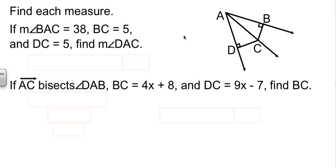So, let's find a couple of measures here. However, they tell us that angle BAC is 38, BC is 5, and CD is also 5. And our job is to find angle DAC. Since C is equidistant from the two sides, it told us that it was 5 in each direction there, 5 to BC and 5 for DC.